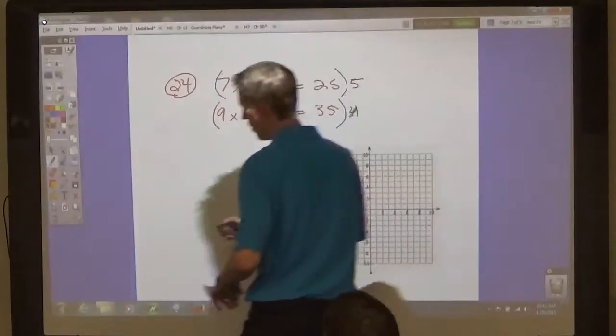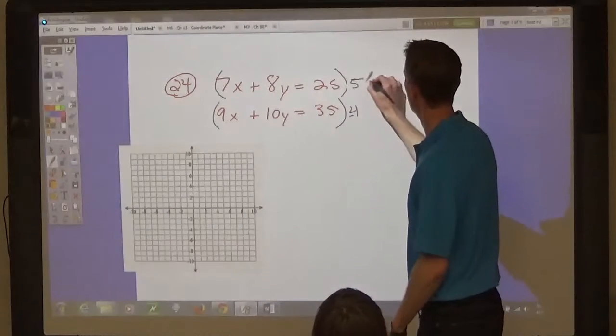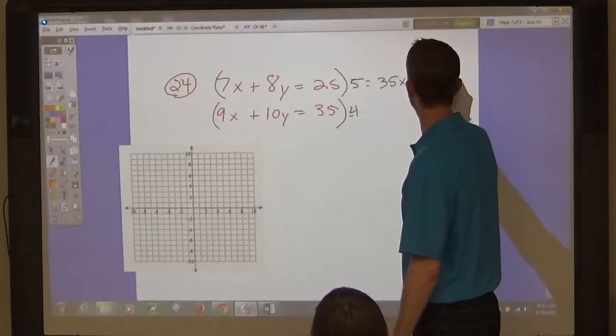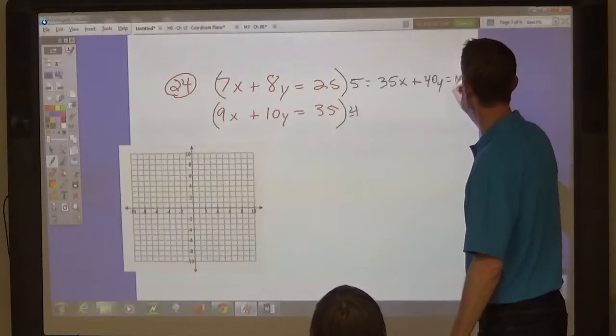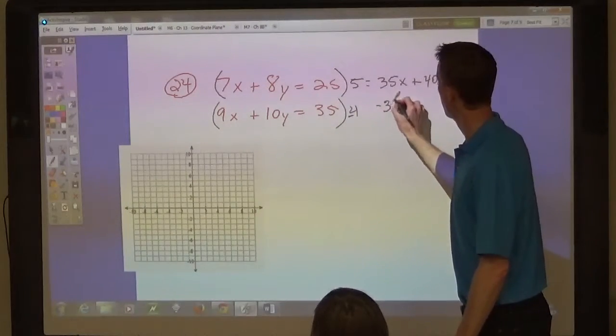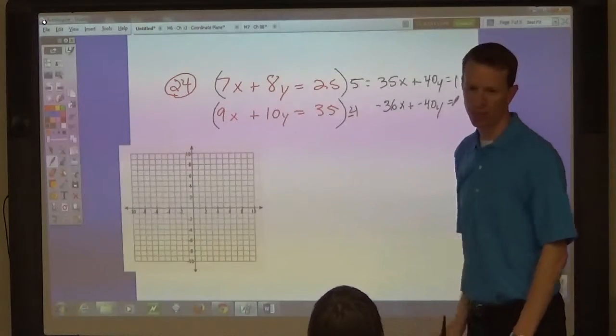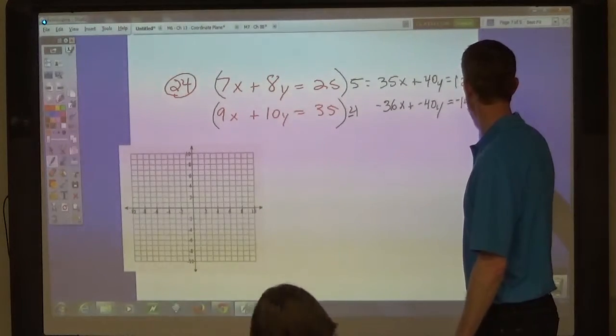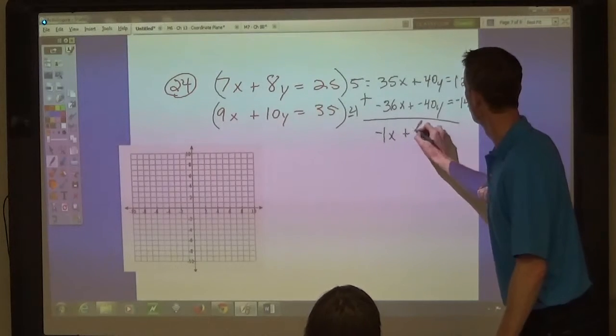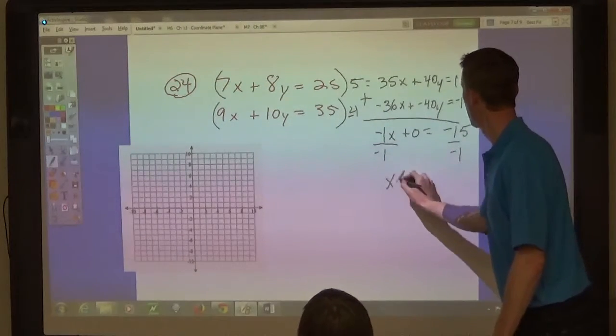Now, I'm going to rewrite them over here. So this is 35x plus 40y equals 125. And this one is negative 4 times 9x is negative 36x plus negative 40y equals negative 140. Add those together. Now we add the two equations. So negative 1x plus 0 equals negative 15. So x is going to be 15, right? Divide by negative 1.